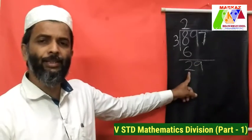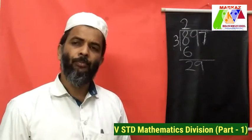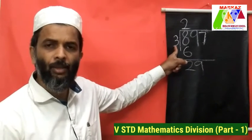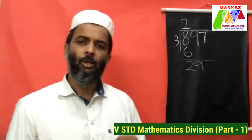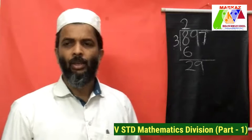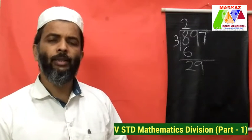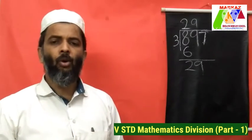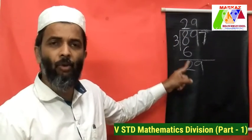Now our dividend is 29. What is the next step? We are repeating the whole process. 29 divided by 3. How many 3s will go in 29? 9 into 3s are 27. The next multiple would be 30, which is more than 29, so we consider 27. That means 9 into 3s are 27, so the quotient is 9. Now we multiply 9 into 3, which gives us 27.